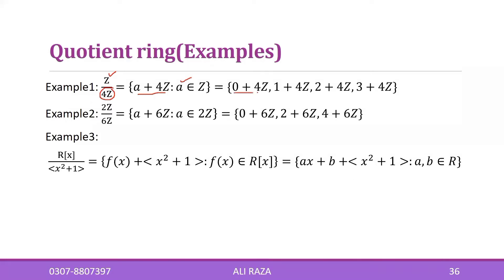If you add zero to it, you get 4Z. Similarly, if you add one, you get one plus 4Z. Similarly, add two, add three. If we further add four to it, the multiples of four are already present, so four will be absorbed into it and it becomes 4Z again.